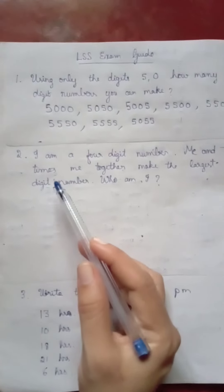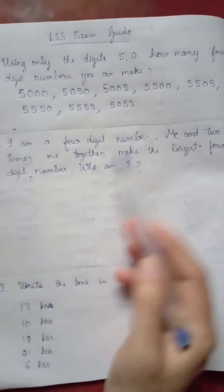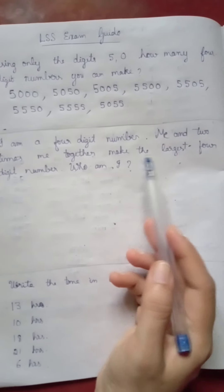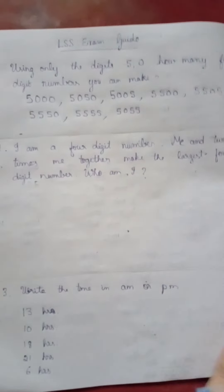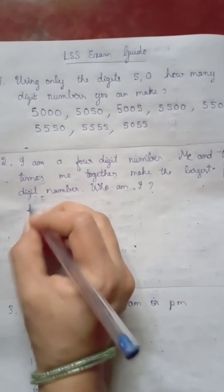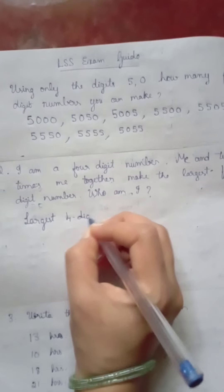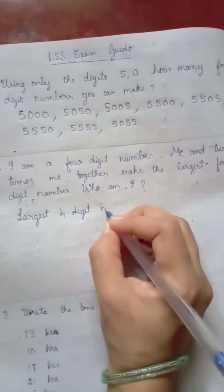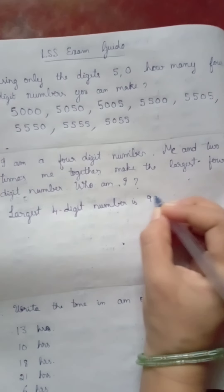Let us go to the next problem. I am a four digit number. Me and two times me together make the largest four digit number. Who am I? So which is the largest four digit number? Largest four digit number is 9999.